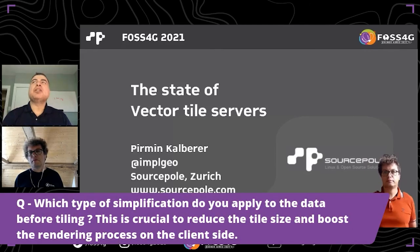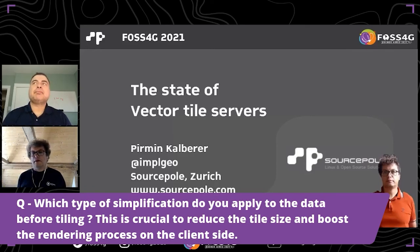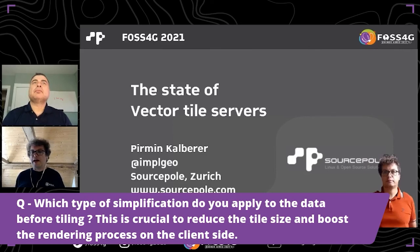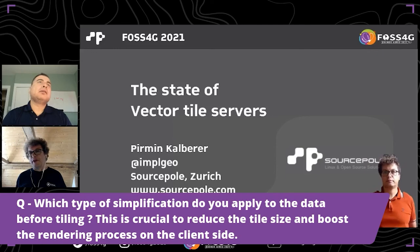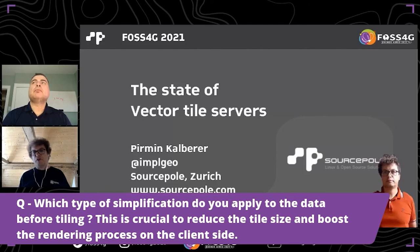Next question: which type of simplification do you apply to the data before tiling? This is crucial to reduce tile size and boost rendering on the client side. Most of these tile servers use well-known algorithms: polygons snap to a grid because it's pixel-based anyway, and for lines the Douglas-Peucker algorithm is the standard that most servers apply automatically. But you can still simplify data yourself and serve your own simplified data if you want the best optimization.